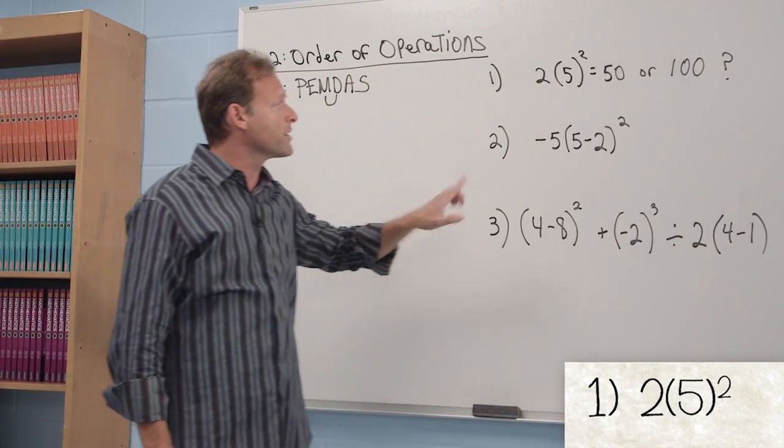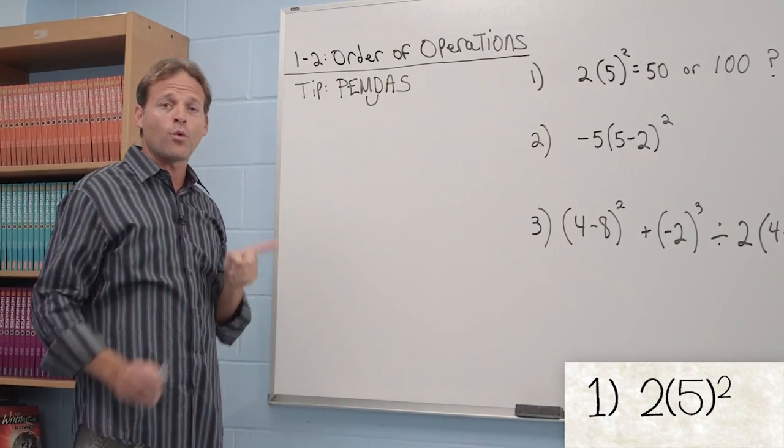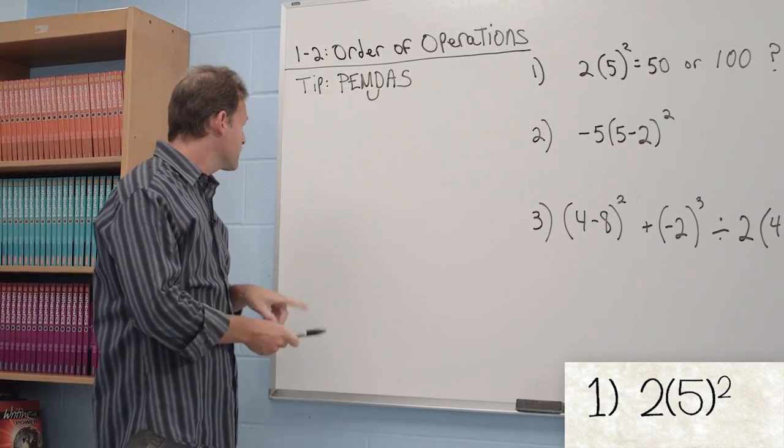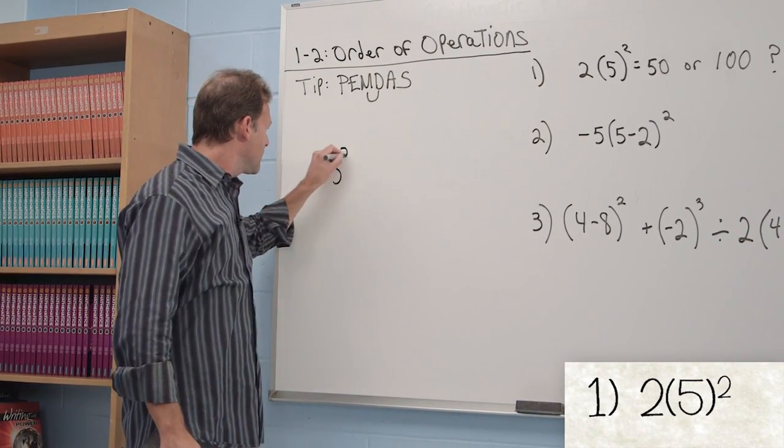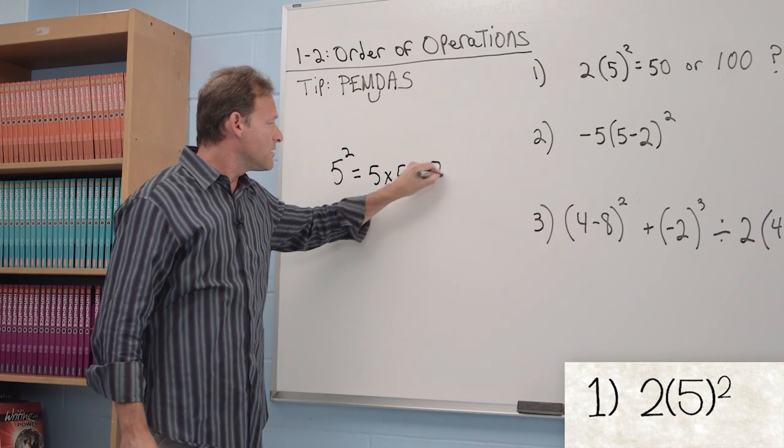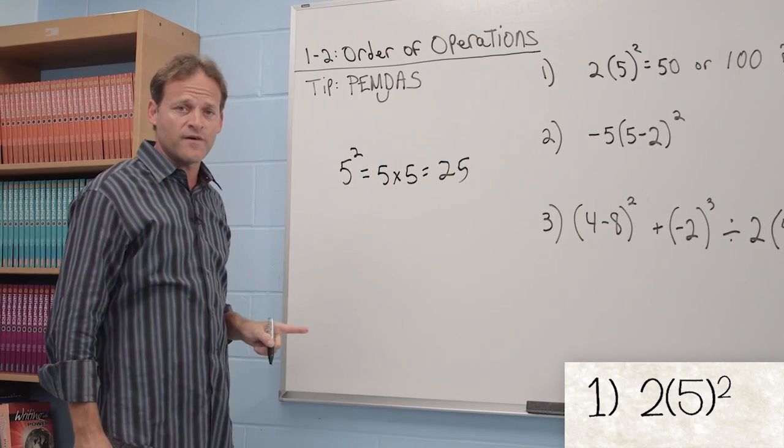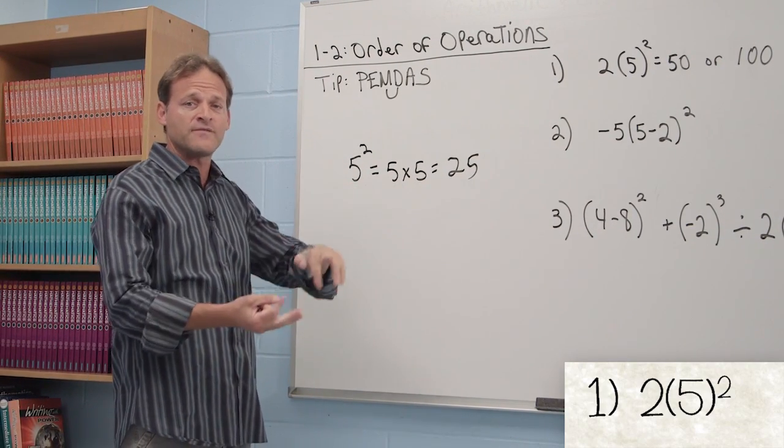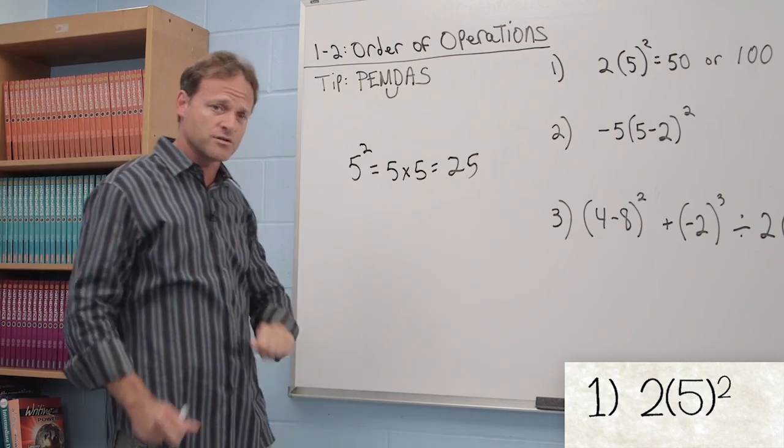For example, 2 times 5 squared. Is this answer 50 or 100? First let me remind you what 5 squared means. It means 5 times 5, which equals 25. If it was 5 cubed, meaning 5 to the third power, it would be 5 times 5 times 5.